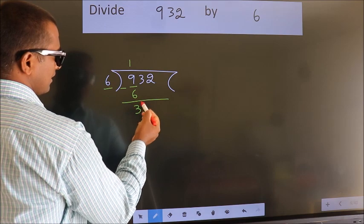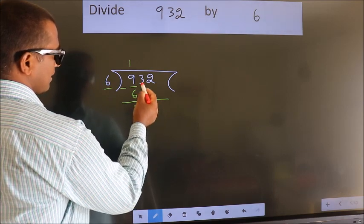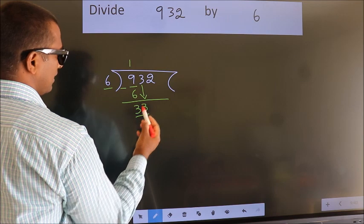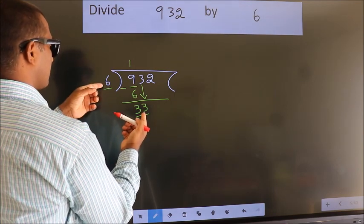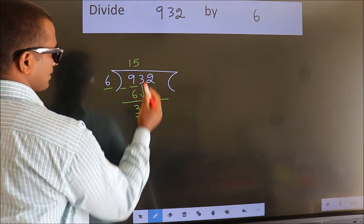After this, bring down the beside number. So, 3 down, giving us 33. A number close to 33 in the 6 table is 6 times 5, which is 30.